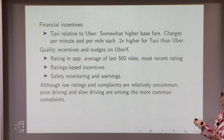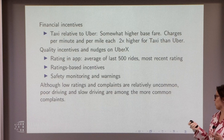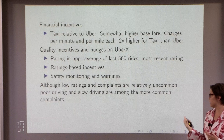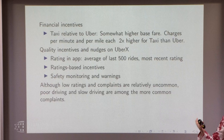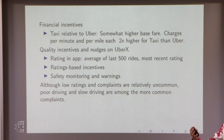Within UberX, there are quality incentives and nudges. You get a rating which is the average of your last 500 rides, and you also see the most recent rating. There are rating-based incentives and safety monitoring and warnings. Generally, low ratings and complaints are relatively uncommon, but poor driving and slow driving are among the more common complaints. I wanted to highlight slow driving because speed is the hardest thing to get at empirically here — people's preferences are non-monotonic. We'll break out results by things that include speed and don't include speed, because the speed results are sensitive to functional form, even using machine learning to fit it.